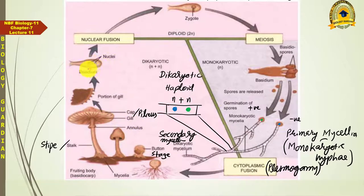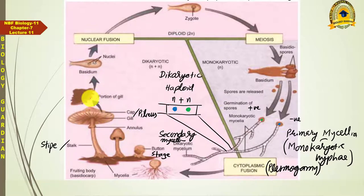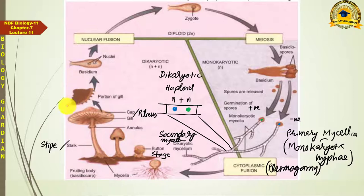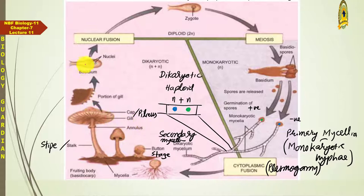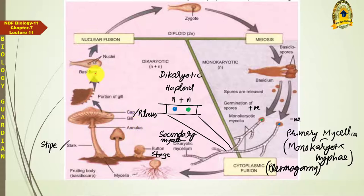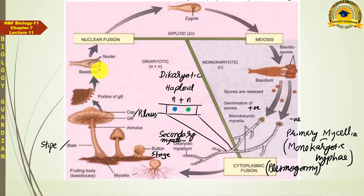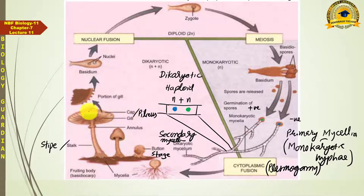These gills actually consist of reproductive structures — many basidia. Basidia are the reproductive structures, and many basidia present in a linear row form the gills. A portion of the gills is shown cut here, and on the surface of this portion, numerous basidia are present. So the gills are composed of many basidia assembled together, present on the margins of the gills.